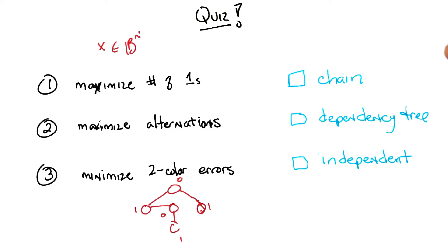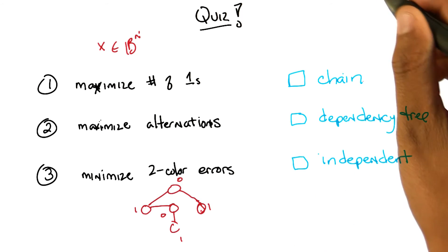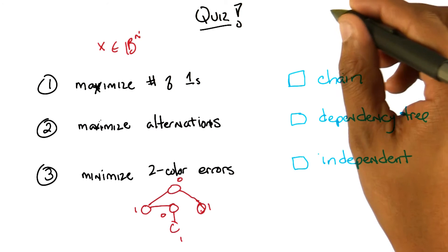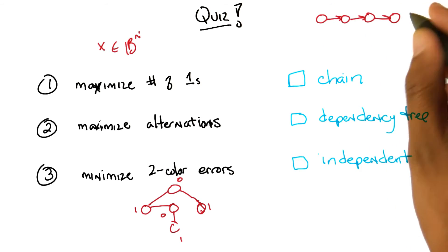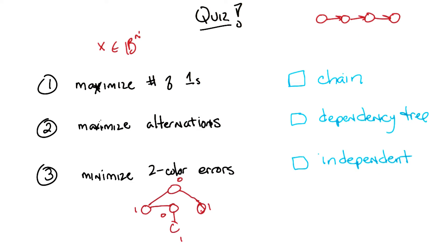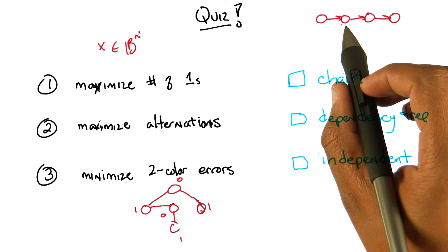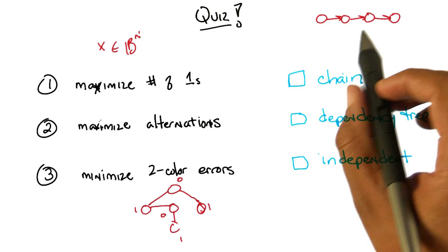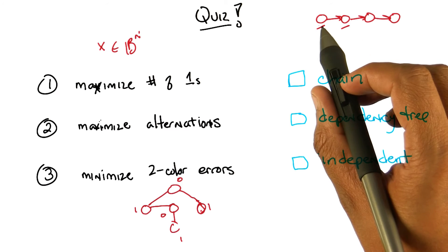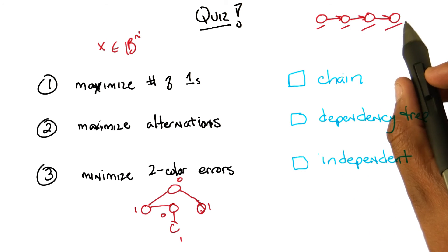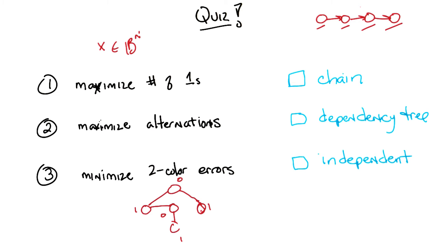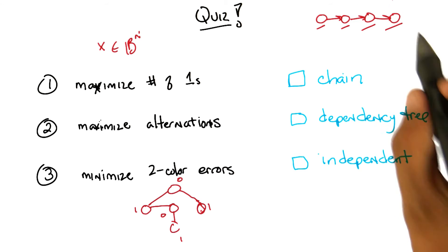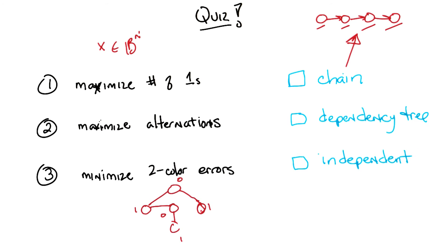Now here are the three distributions. The first distribution is a chain. In Bayesian network terms, a chain is a graph where every feature depends upon its previous neighbor. So in a four-bit string, the first bit depends on nothing, the second bit depends on the first, the third depends on the second, and the fourth depends on the third. You generate a sample from the first, then generate each subsequent sample conditioned on the previous value. It's a specific chain matching the ordering of the bits.